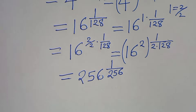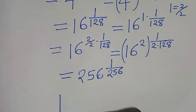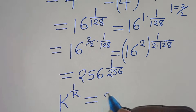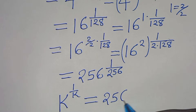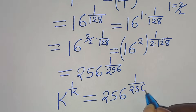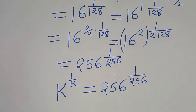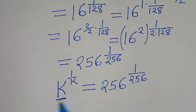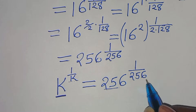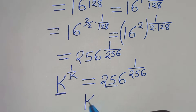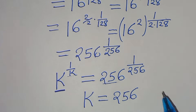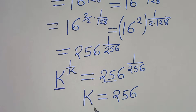So we have k to the power of 1 over k equals 256 to the power of 1 over 256. As you can see, the base and the exponent are the same on both sides — k matches 256 in both positions. This concludes that k is equal to 256.